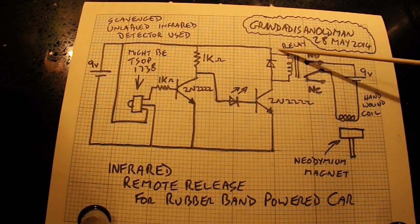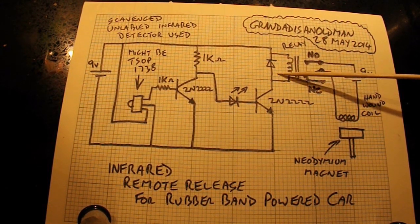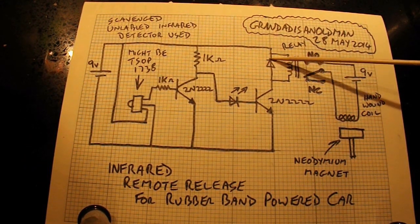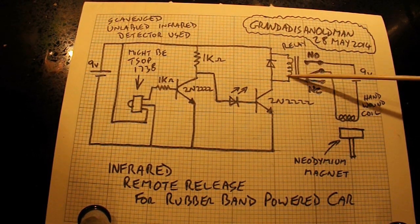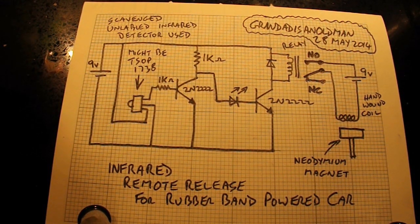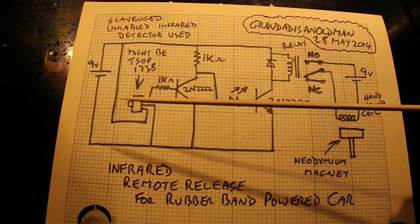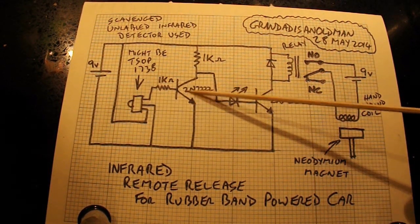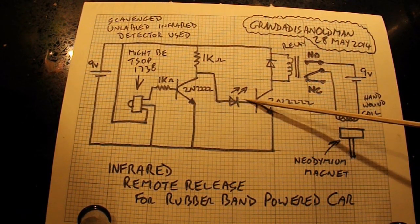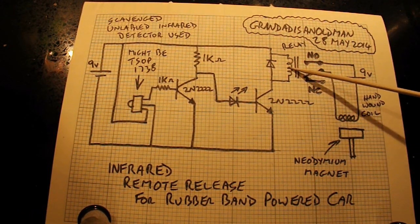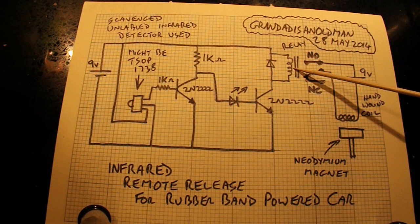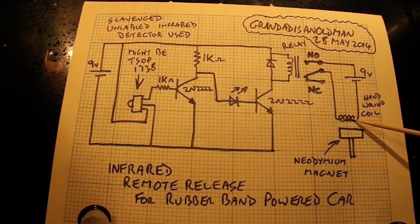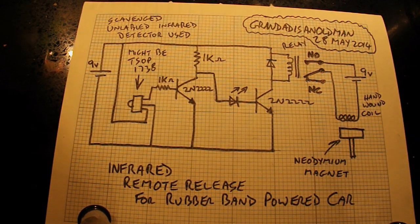That diode there is just to take any of the, as I would call it, back EMF. But it's whatever they call it. I can't remember what they call it. It's when the current switches off, you get a bit of a back spike there. But that's what I've used. As I said, using the TV remote pulses this, which means that pulses on and off, which means that pulses on and off, which means the relay chatters. But that doesn't matter, because all I need is for it to operate once to release the wheel. The fact that it carries on chattering doesn't matter at all.